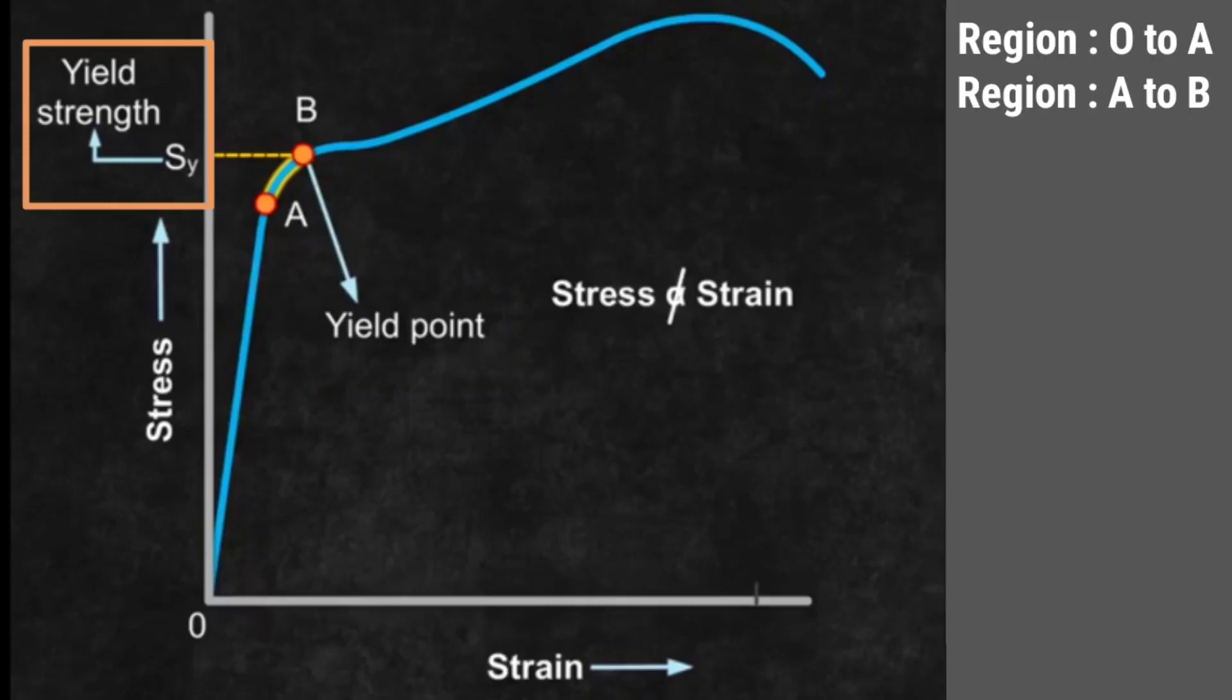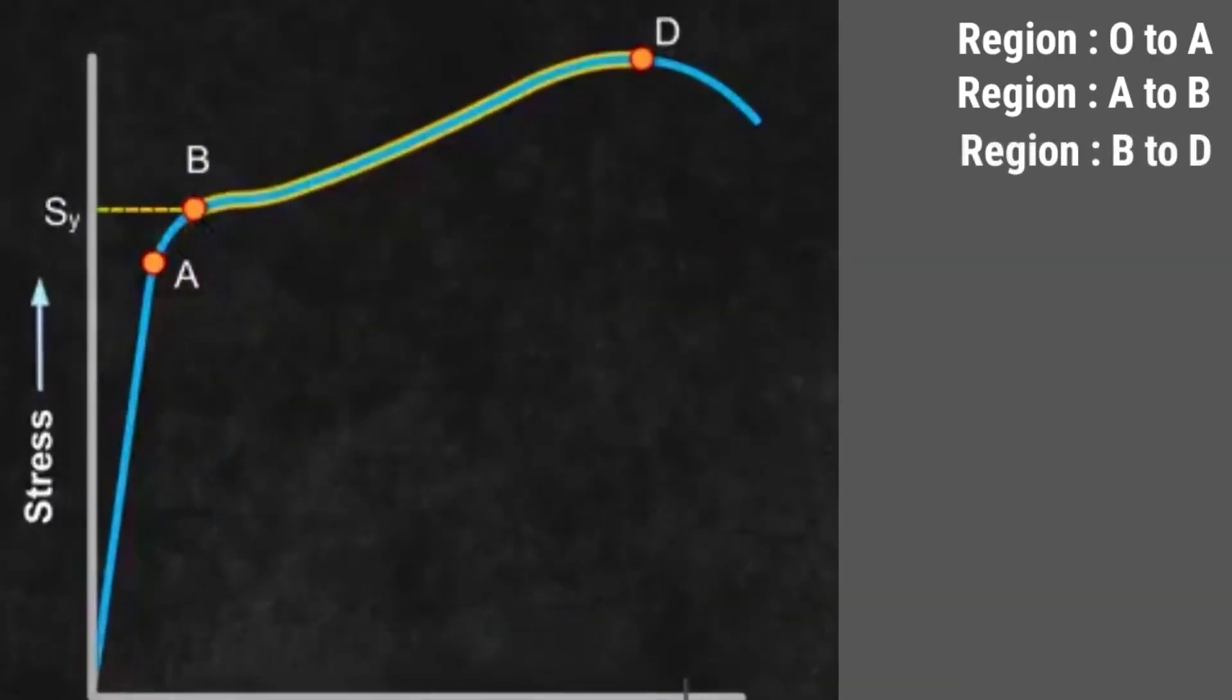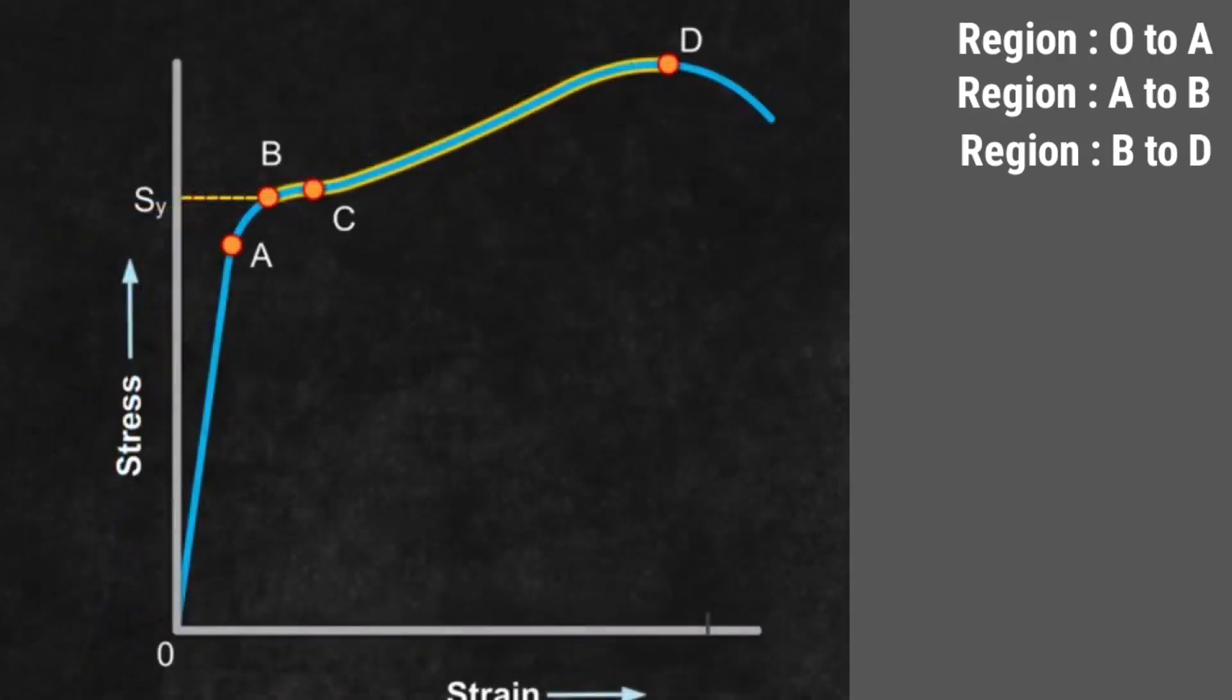If the load is increased further, the stress developed exceeds yield strength and strain increases rapidly even for a small change in stress. Check the figure. The body is represented by the curve B to D. When the load is removed at point C between B and D, the body does not regain its original dimensions. The material is said to have permanent deformation or permanent set. This deformation is called plastic deformation, and this region is called the plastic region.